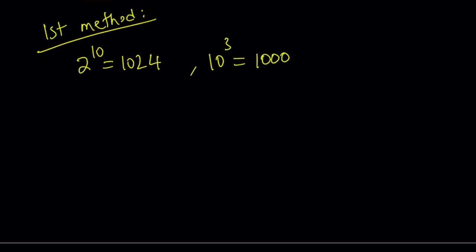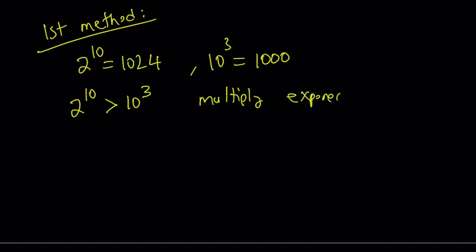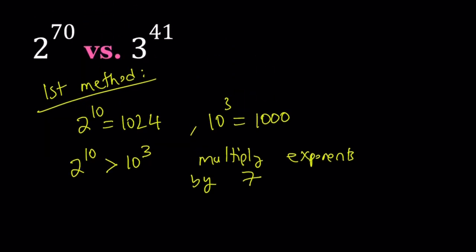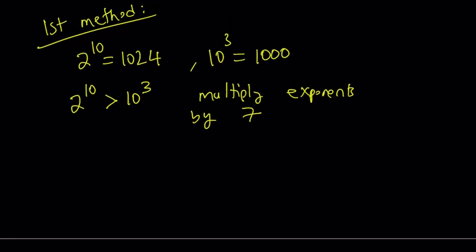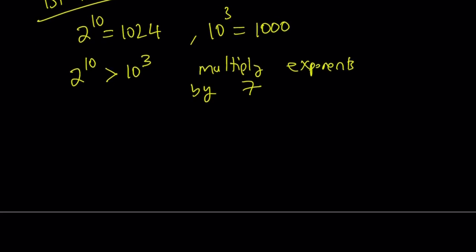So in this case, we know that 2 to the 10th power is greater than 10 to the power 3. So here's what we're going to do: multiply the exponents by 7. And the motivation behind that is, if I do that, I'm going to be getting 2 to the power 70 on the left-hand side, and something else on the right-hand side. And then we'll figure out how to transition into our own power.